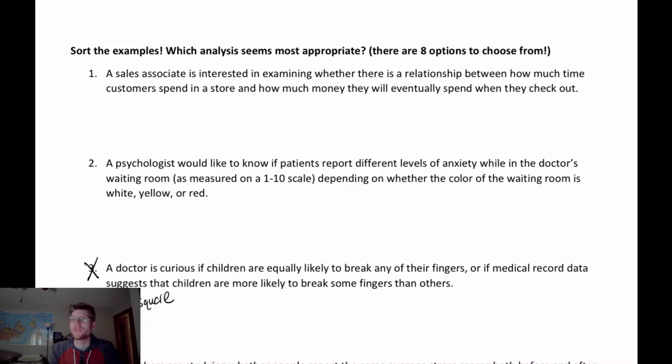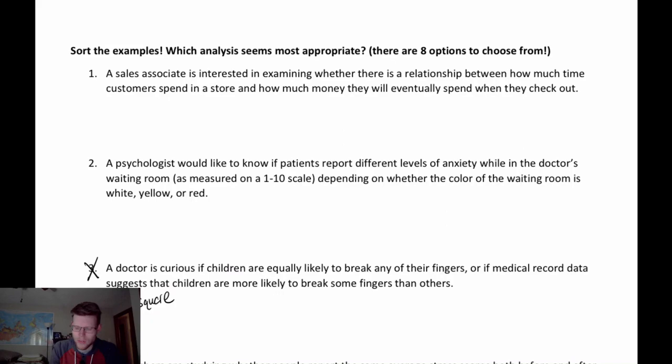The first question: a sales associate is interested in examining whether there is a relationship between how much time customers spend in a store and how much money they will eventually spend when they check out. To decide what would be appropriate, we look at what types of data are present. Time and money are both continuous numeric variables.